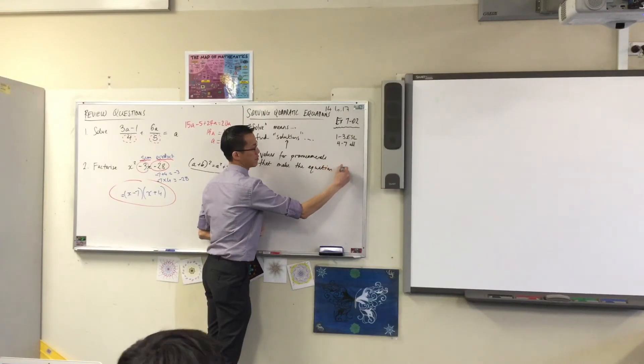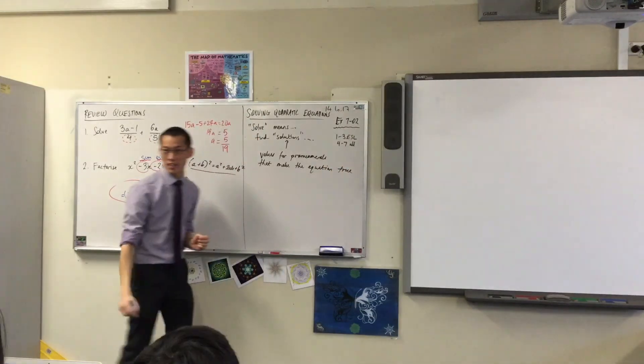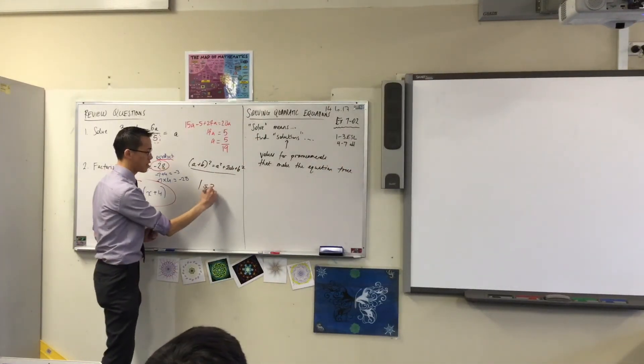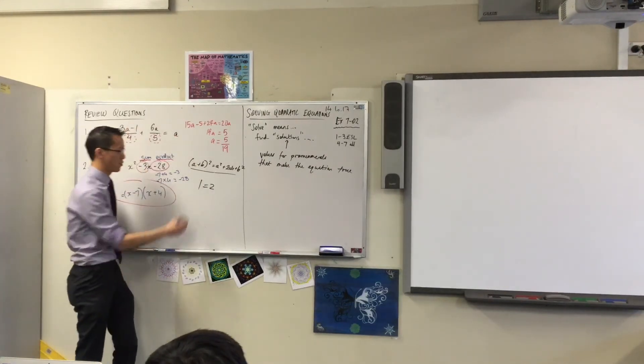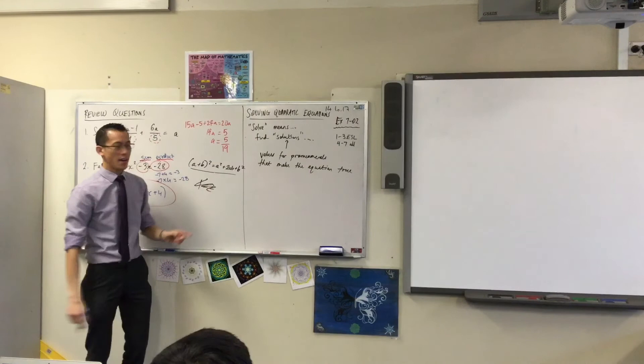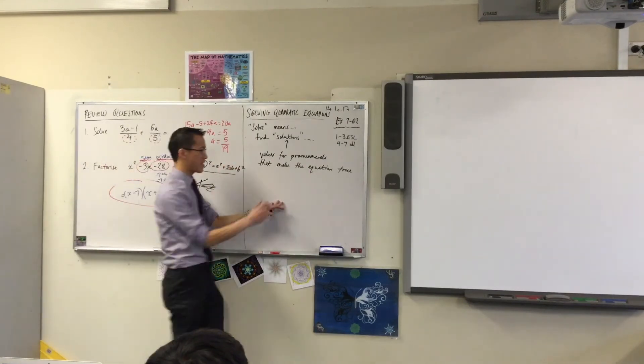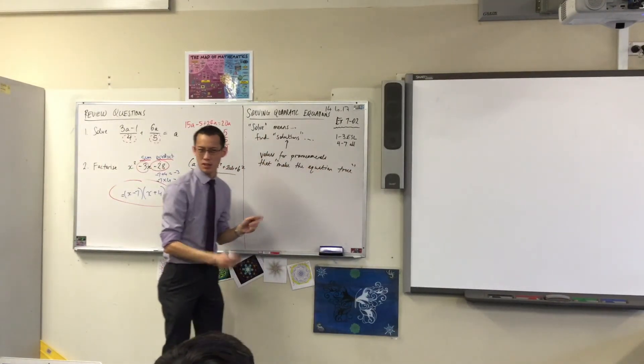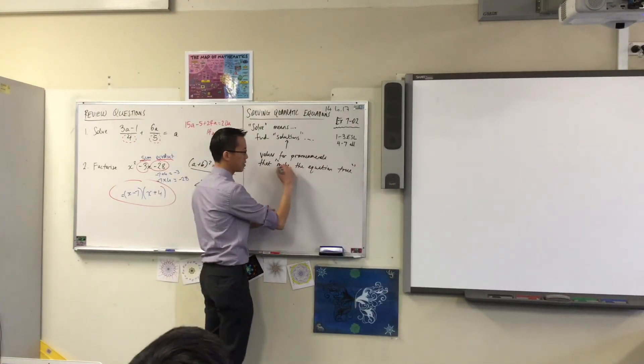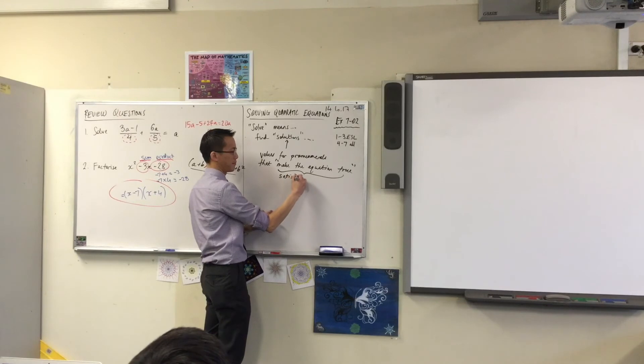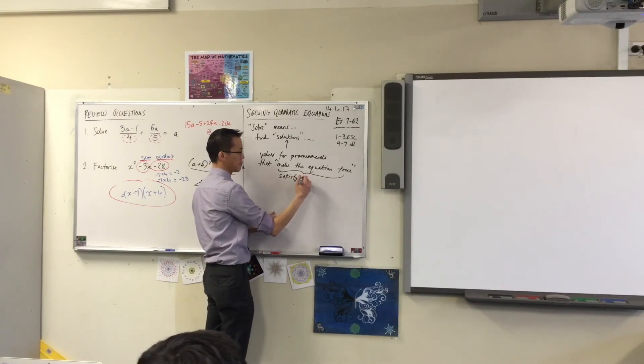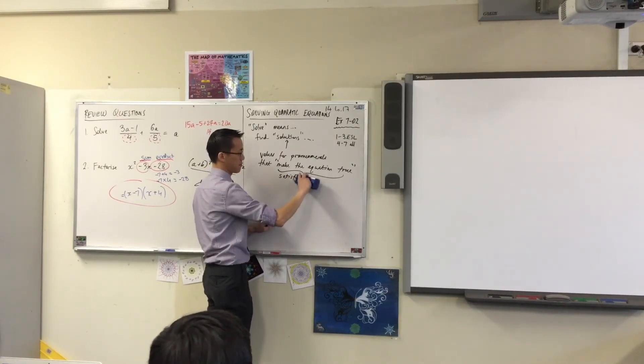Some equations aren't true. You can write an equation that isn't true. For example, this is an equation that's not true. But we want to make this equation true rather than this one. Our fancy technical way of saying that, make the equation true, because that's a bit colloquial, is we say that that is called satisfying the equation. Satisfying. Without the equation.